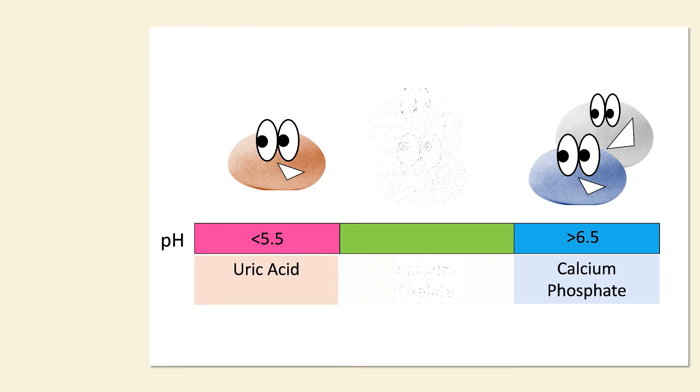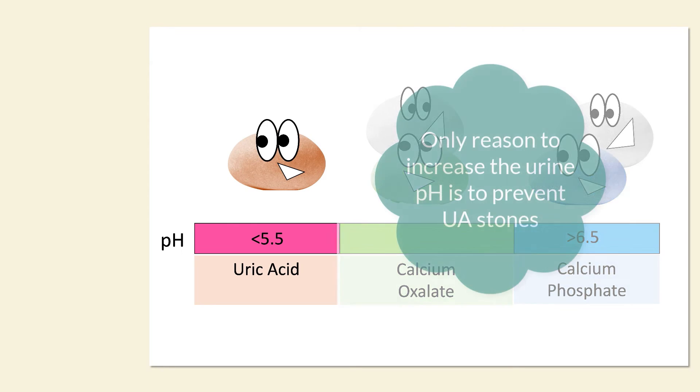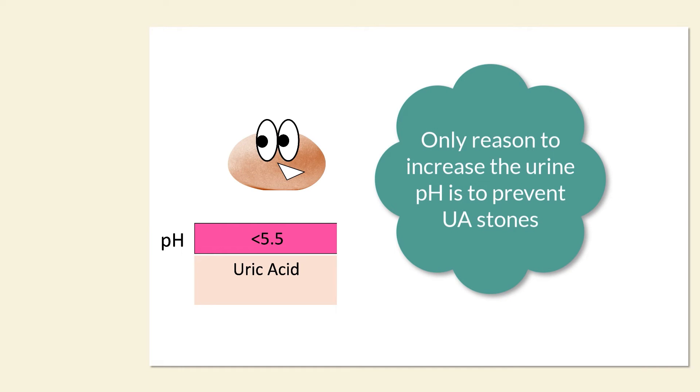As for calcium oxalate, this can form at completely normal urine pH. So using this knowledge, we can see that the only true reason to alkalinize the urine and move the urine pH upwards is to prevent the formation of uric acid stones in people who are vulnerable to this.